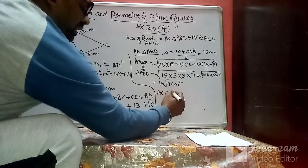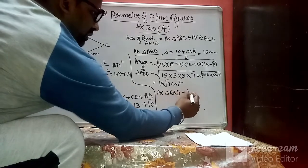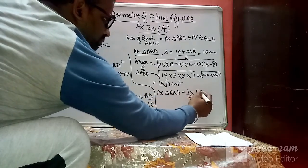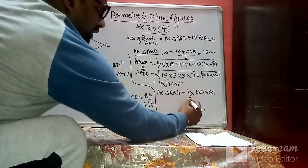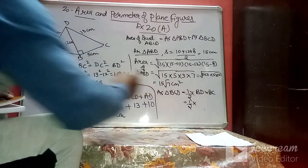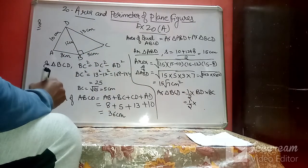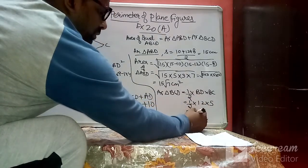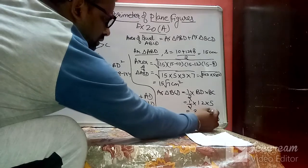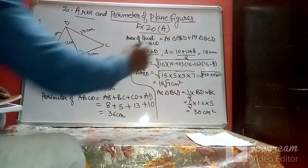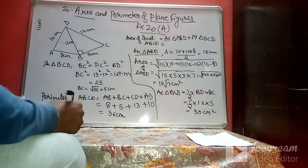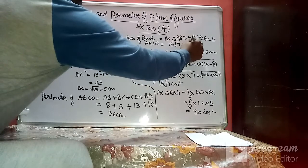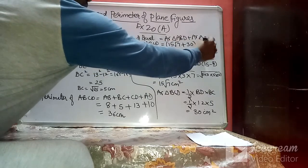For triangle BCD, since it is a right angle triangle, area = ½ × BD × BC = ½ × 12 × 5 = 30 cm². So the total area of quadrilateral ABCD is 15√7 + 30 cm².